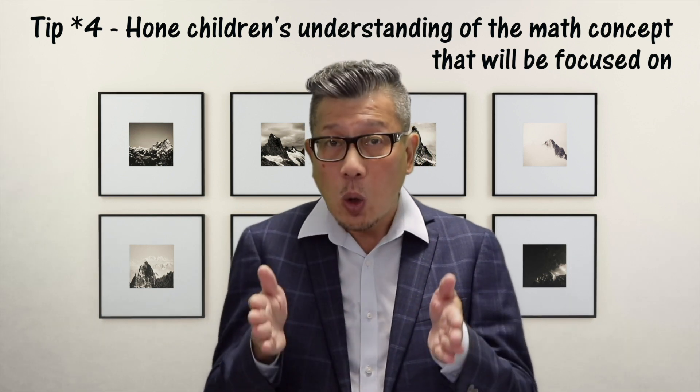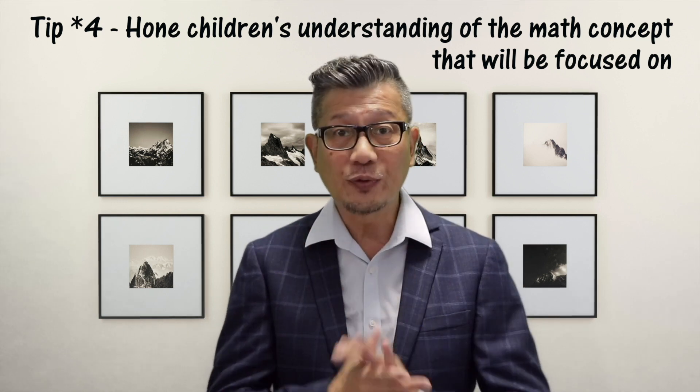Tip number four: hone children's understanding of the math concept that we want to focus on. You are now set to deepen children's understanding of the math concept you want them to learn during math talk. For example, if children are only able to count the balls reliably up to five when asked to count to ten, focus on the quantities that children are not familiar with — playing counting games that focus on six, then gradually moving on to seven, eight, nine and ten. Since children are having fun learning through play with adults engaging in meaningful math talk, they are likely to learn the math concepts more effectively.